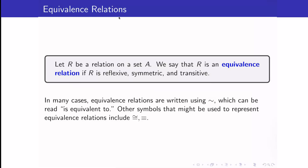Now, in many cases, equivalence relations are written using this symbol, and we read it as 'equivalent to.' The other symbols that we use when talking about equivalence relations would be these two other symbols. So, meaning to say, if we have an equivalence relation, instead of writing A R B, we just write it as A is equivalent to B. The reason why I used R previously is because I am reserving these symbols for equivalence relations.